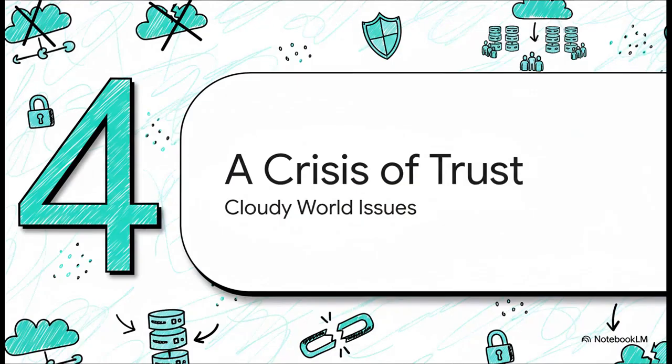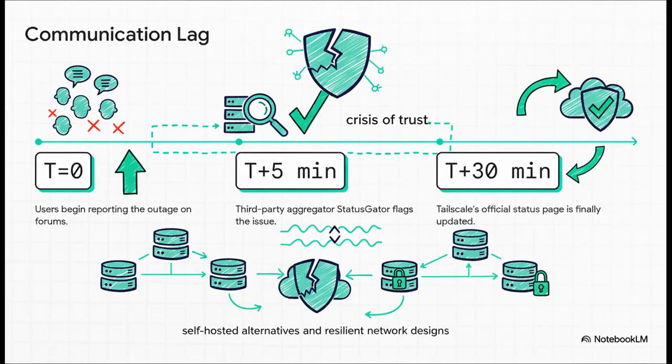But if we zoom out a bit, this whole incident was about way more than just a technical glitch. It really points to a much bigger issue in our world that's just so dependent on the cloud. Just look at this timeline. So, at time zero, users knew something was wrong. They're already on the forums. Within just five minutes, an automated third-party service, StatusGator, had figured out there was a problem. And yet, it took a full half hour for the company's own status page to say something. In internet time, 30 minutes is an eternity. And that's where trust really begins to break down.